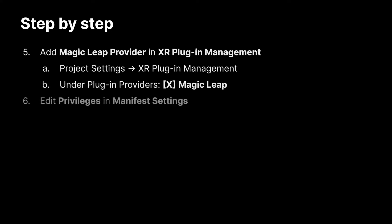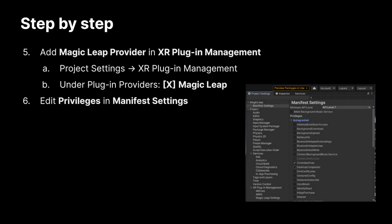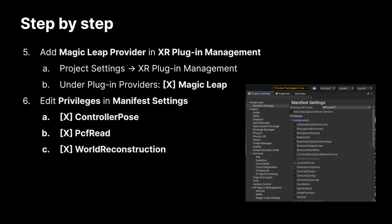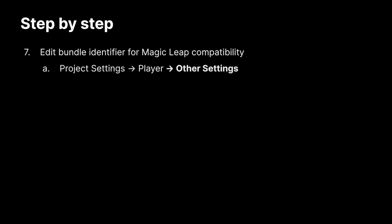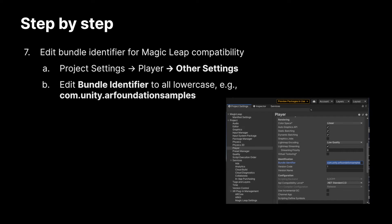Now we need to make sure we add the Magic Leap Provider in XR Plugin Management, found in the project settings. We also need to set up application privileges in the manifest. First, there's the controller pose, which allows access to the controller tracking. PCF Read offers access to spatial anchor-like features known as persistent coordinate frames. World Reconstruction enables spatial mapping and plane detection. And Camera Capture provides access to the camera for image tracking. Now we edit the bundle identifier to be compatible with Magic Leap — this is in project settings, player, other settings.